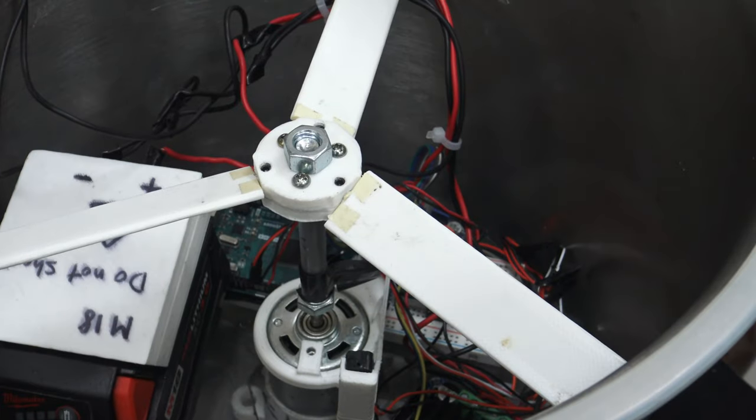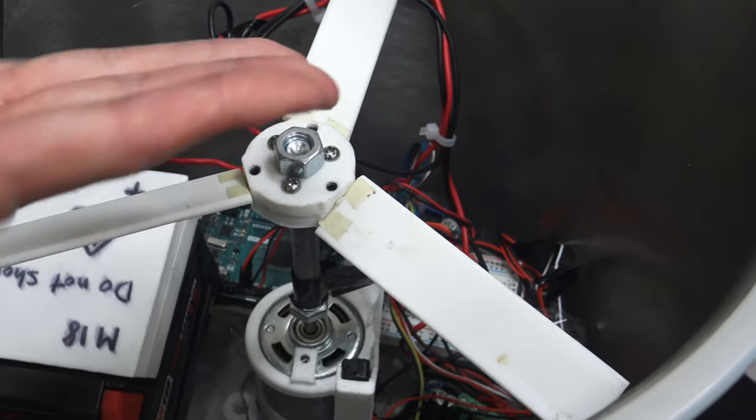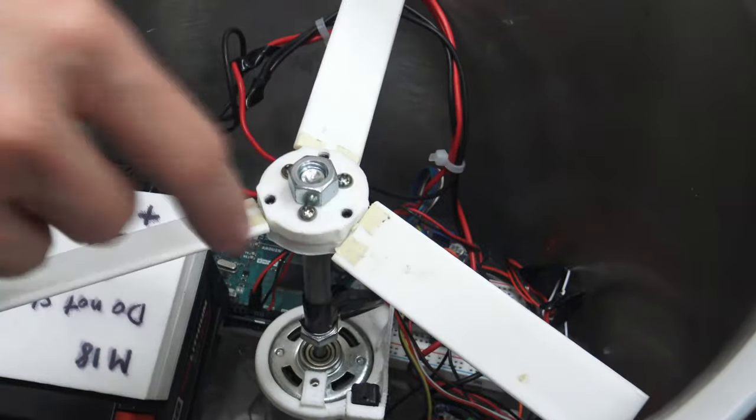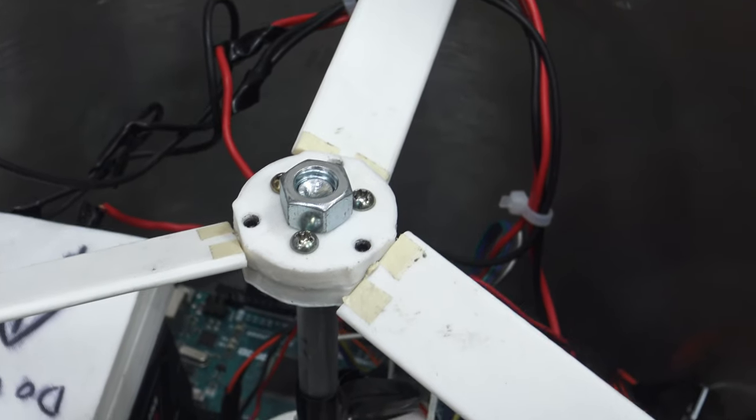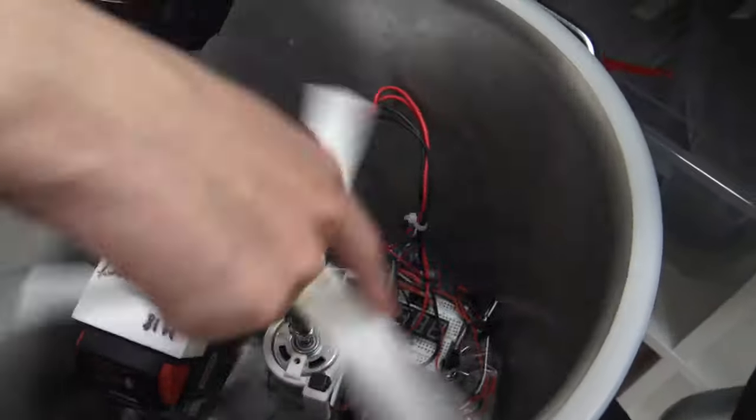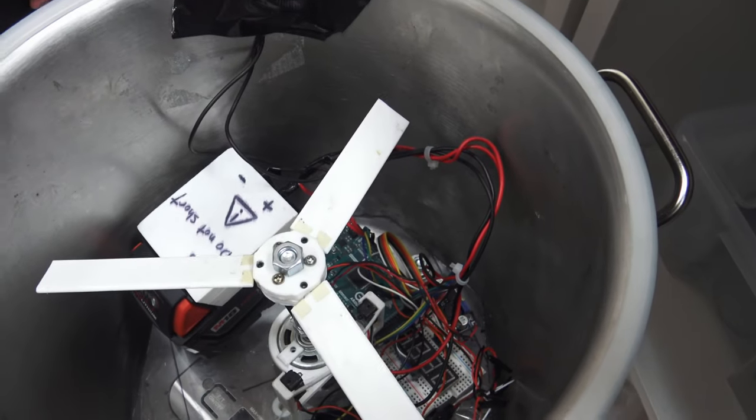So essentially we have a motor here that will spin the propeller. And this propeller is specially designed so that we can change the angle of attack. So I believe what you need to do is just loosen these set screws and then you can turn these three plates into whatever angle you desire.